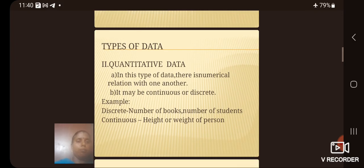Types of data: Quantitative data. In this type of data there is numerical relation with one another. It may be continuous or discrete. Example discrete: number of books, number of students. For continuous: height or weight of person.